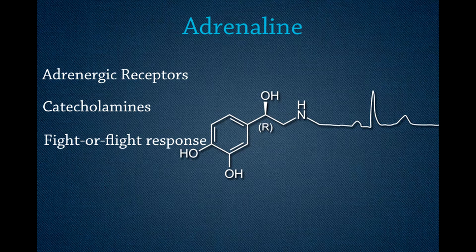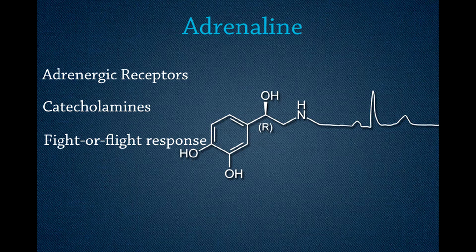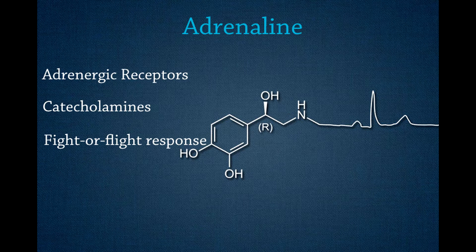When you are threatened, the fight-or-flight response triggers. The reaction begins in the amygdala, which triggers a response in the hypothalamus. The initial reaction is followed by the activation of the pituitary gland and its secretion of the hormone ACTH. The adrenal gland is also activated and releases the neurotransmitter epinephrine, also known as adrenaline.